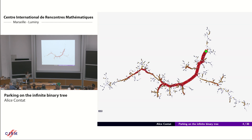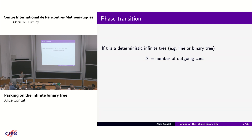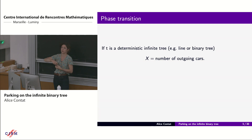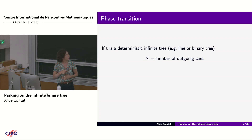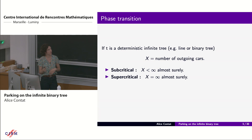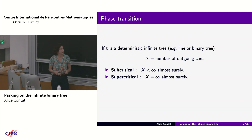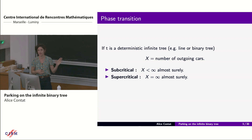A cluster of parked spots occupies a positive proportion of the tree. Near the leaves there may be free spots, but there is really a big component. To formalize this phase transition: if the tree is infinite — for example the simplest case, just a line, or the binary tree I will talk about later — there is a phase transition between a subcritical regime where the number of outgoing cars is almost surely finite and a supercritical regime where it is almost surely infinite, with no intermediate regime.